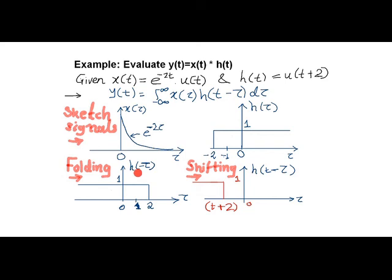Then we perform shifting of the folded h of tau signal which becomes h of t minus tau, where the time instance we have chosen is t plus 2.